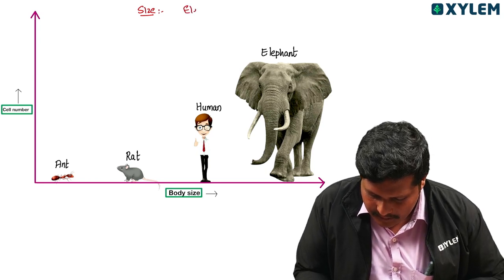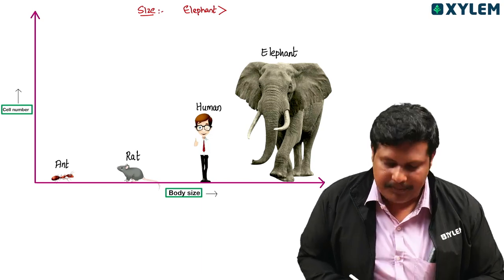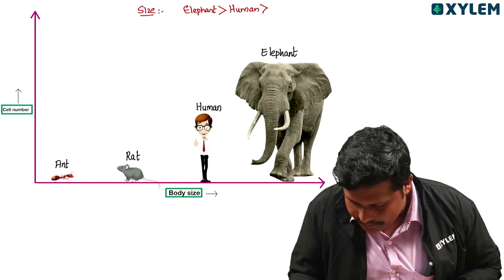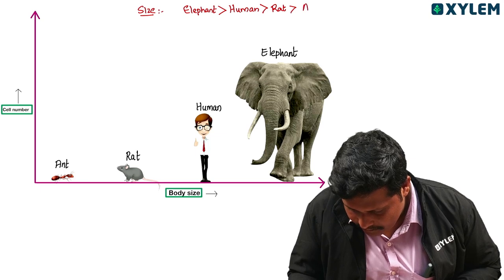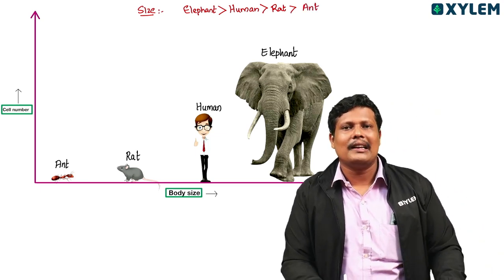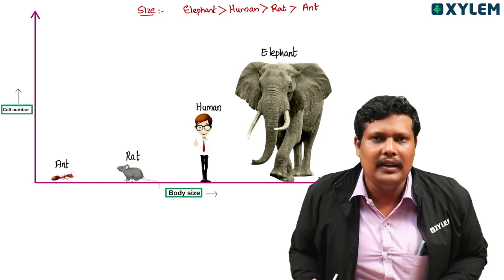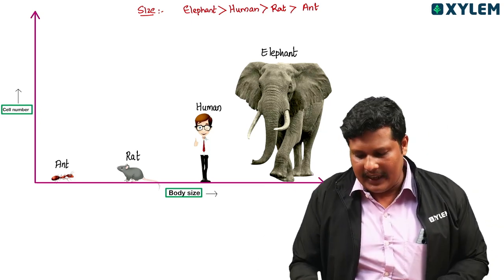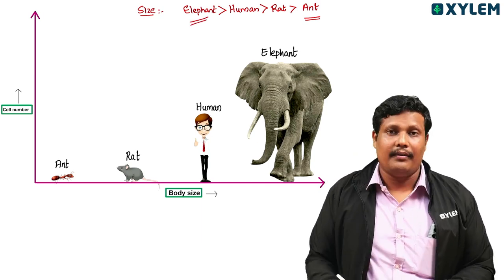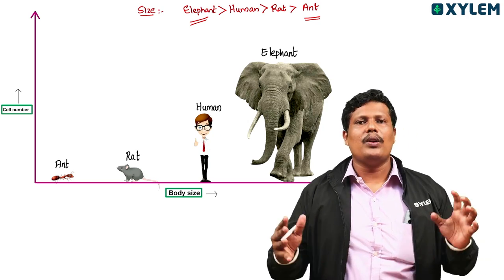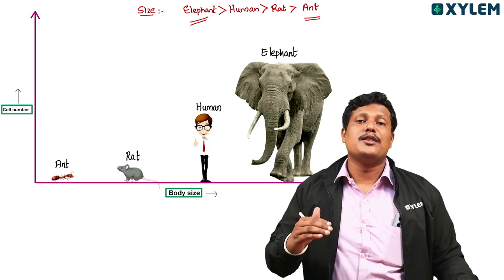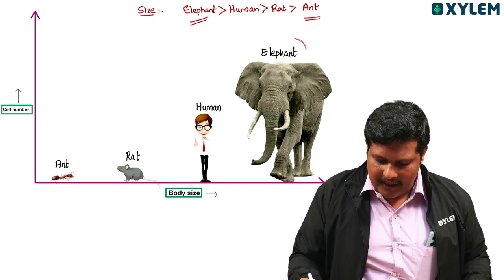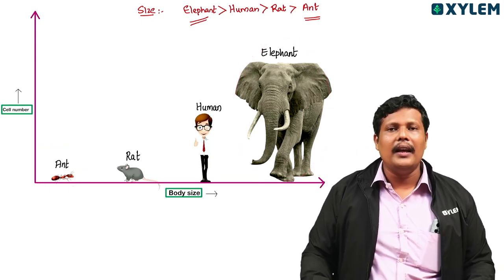An elephant's size is greater than a human's, greater than a rat's, and greater than an ant's. Now, the size of the body is equal to the number of cells. If we consider an elephant compared to an ant, the elephant's body contains a greater number of cells.